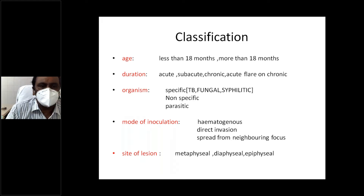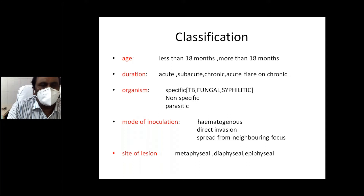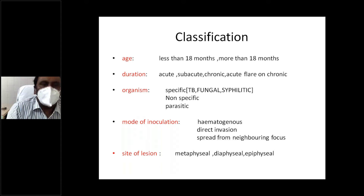In hematogenous infection, a septic focus exists somewhere in the body — in children, it may be tonsil infection, a boil, or in newborns, umbilical cord infection. That septic focus is carried by blood and deposited into the bone. Direct inoculation is most commonly seen in adults — post-traumatic infection, compound fractures where bone is exposed, or post-operative implant infection.